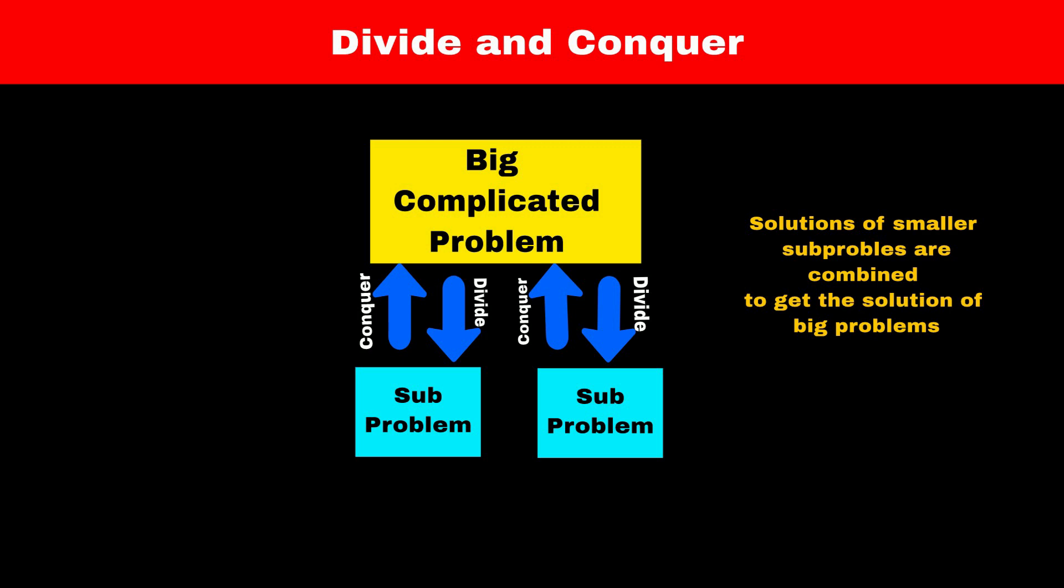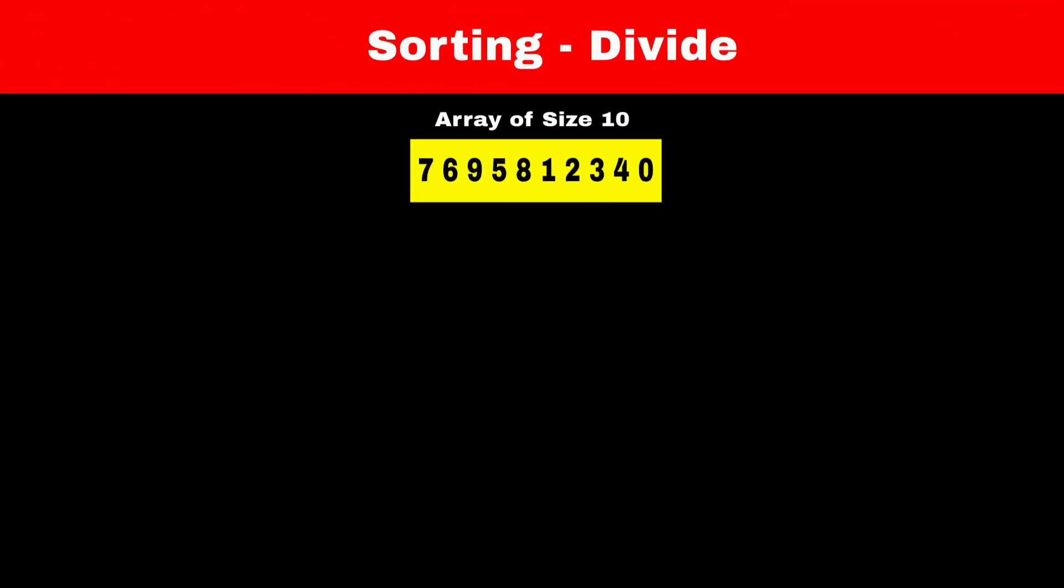Now let's see how we can use divide and conquer for sorting an array. Consider an array of size 10. According to divide and conquer strategy, we have to split this array into smaller sub-arrays.